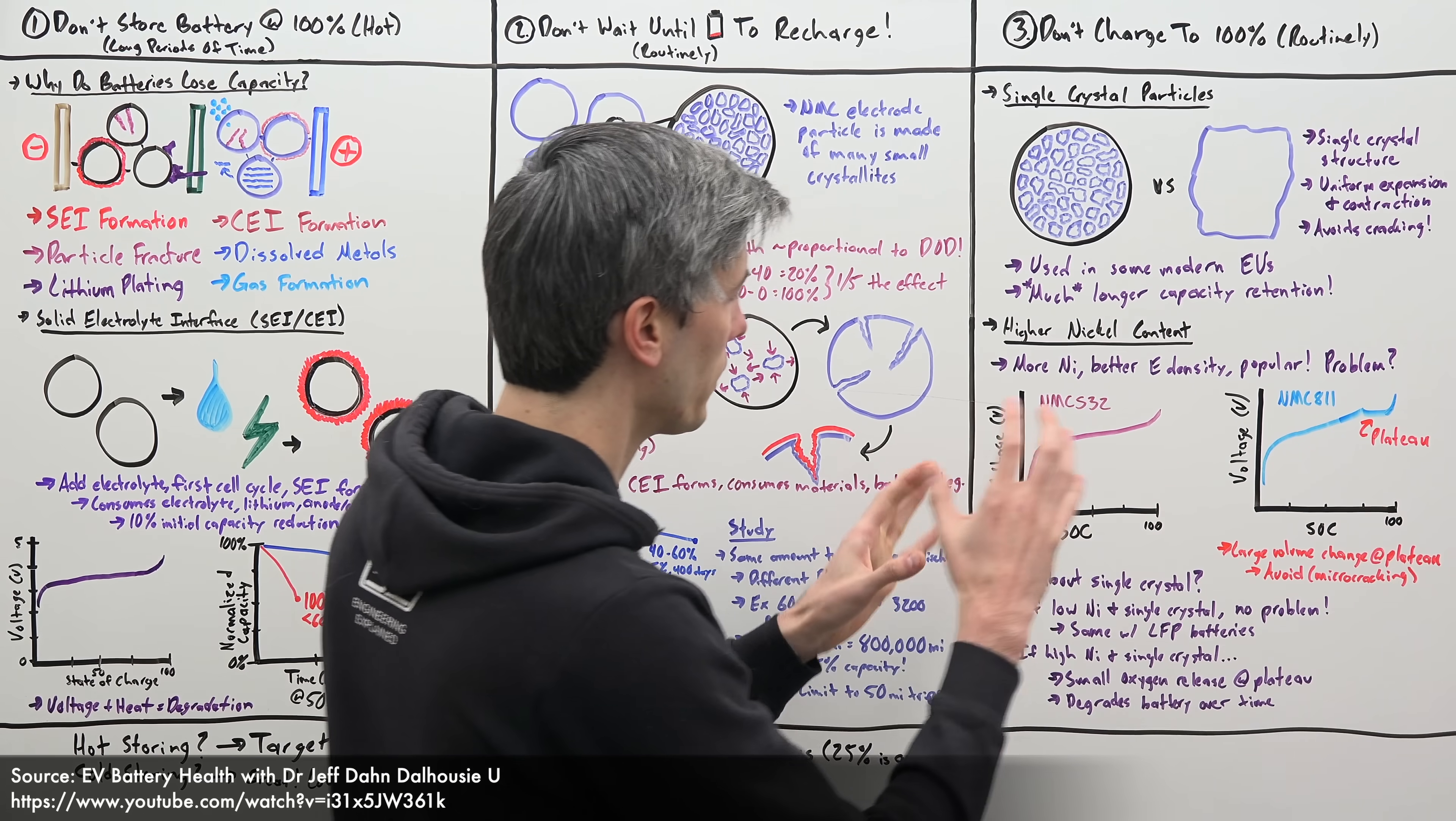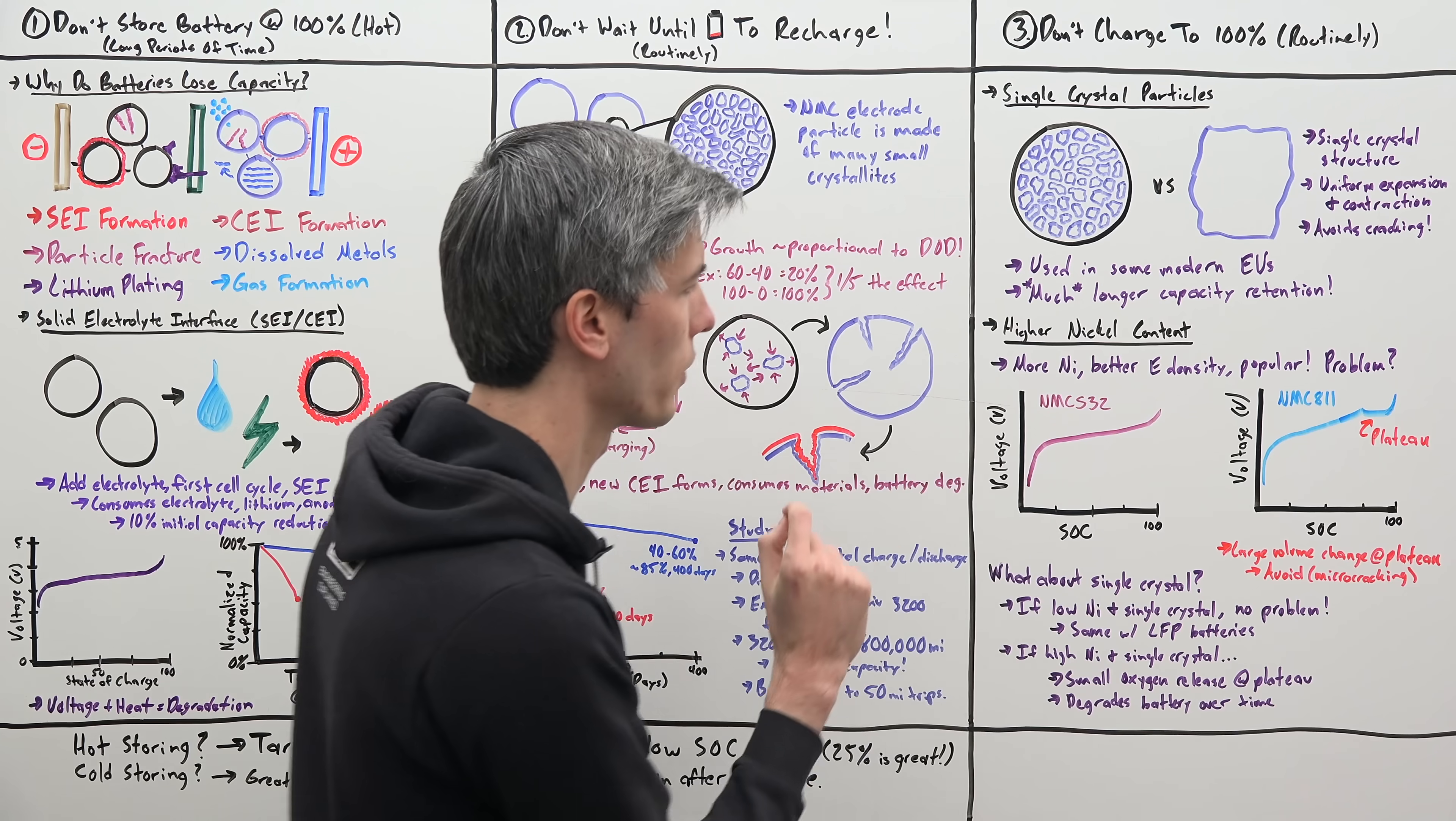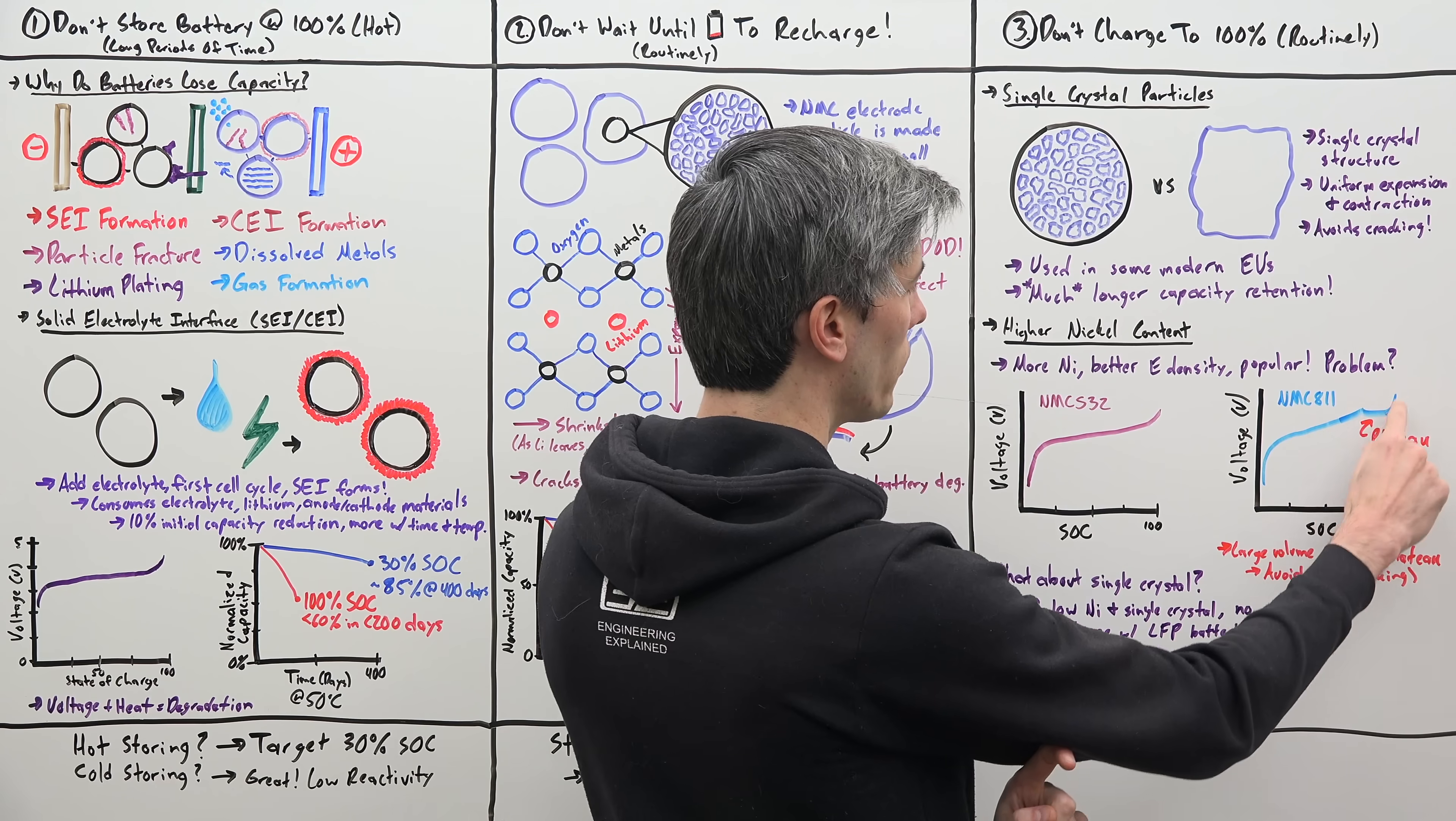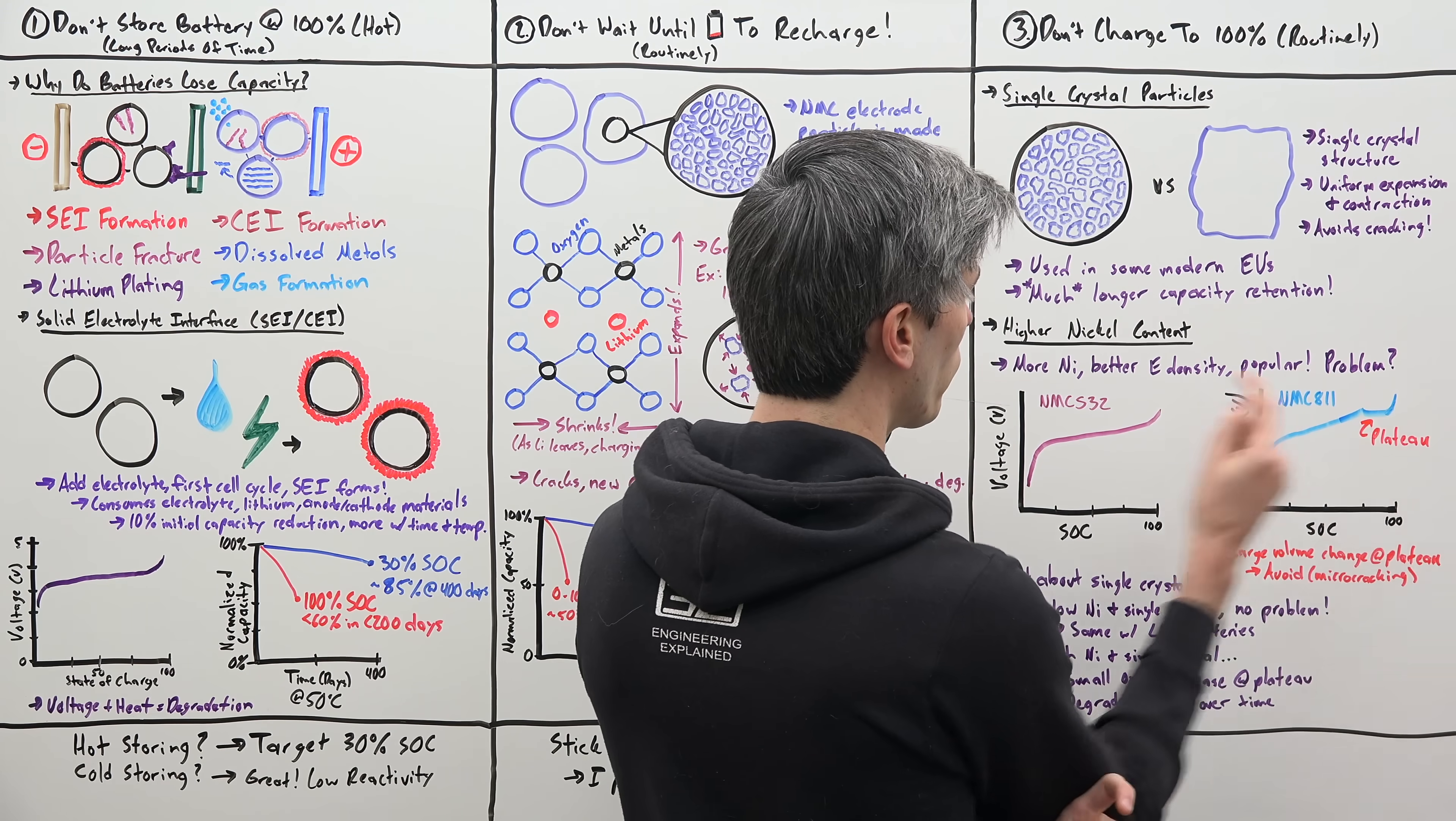Well here we're looking at two different graphs with different nickel content in these batteries. This one has about 50% for the cathode, this one has about 80% for the cathode. So using that higher nickel content, you can see the voltage curve looks a bit different, where you have this plateau at the end for that latter portion of the state of charge. From about 75% to 100%, you've got this plateau.